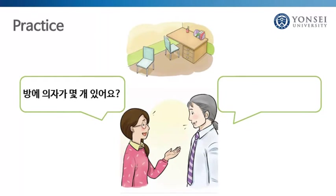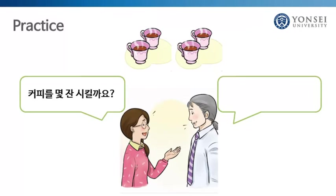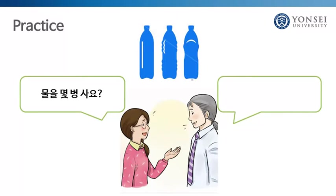Now listen to the questions and answer. 방에 의자가 몇 개 있어요? 두 개 있어요. 커피를 몇 잔 시킬까요? 커피를 네 잔 시켜요. 물을 몇 병 사요? 세 병 사요.